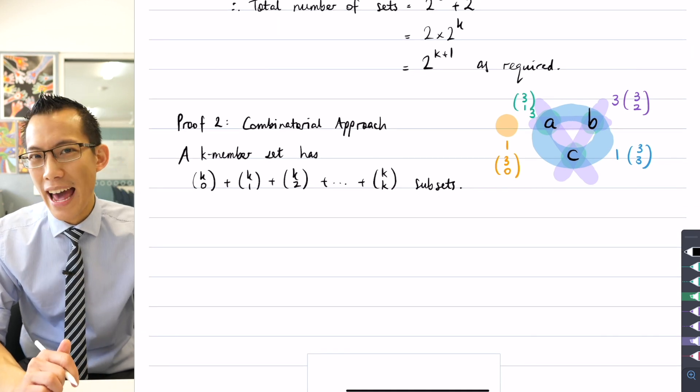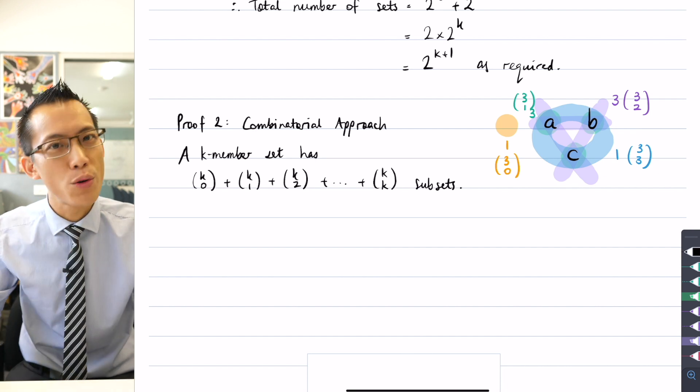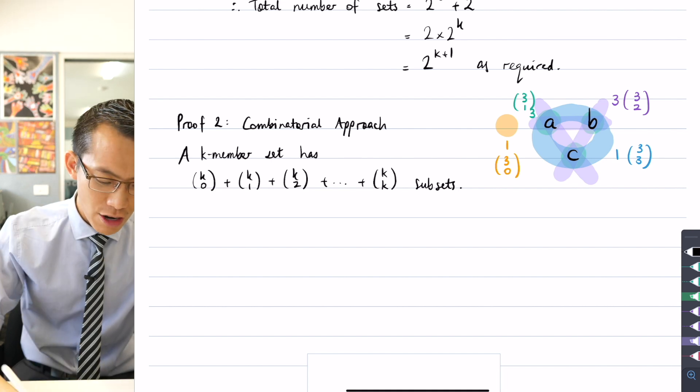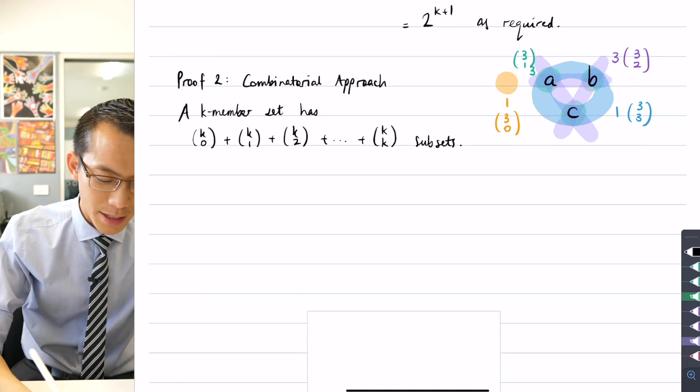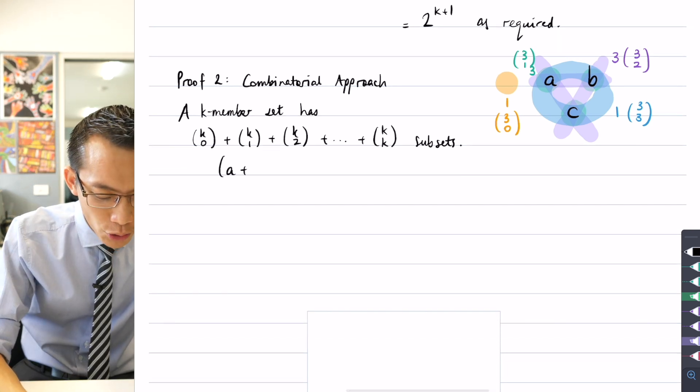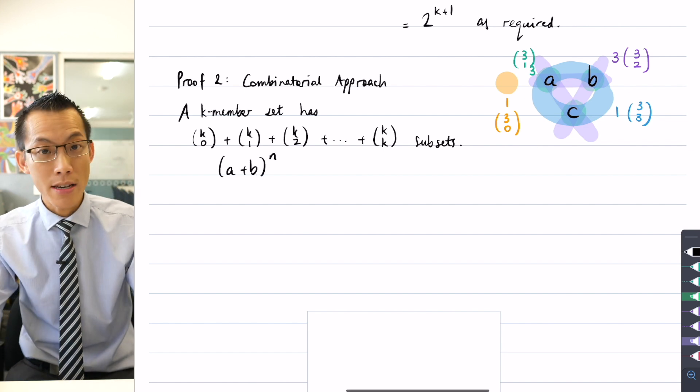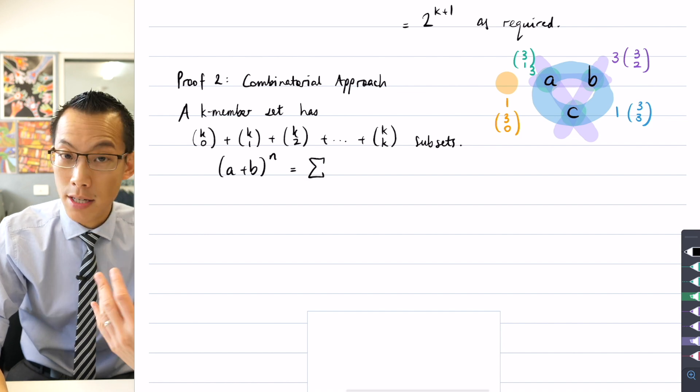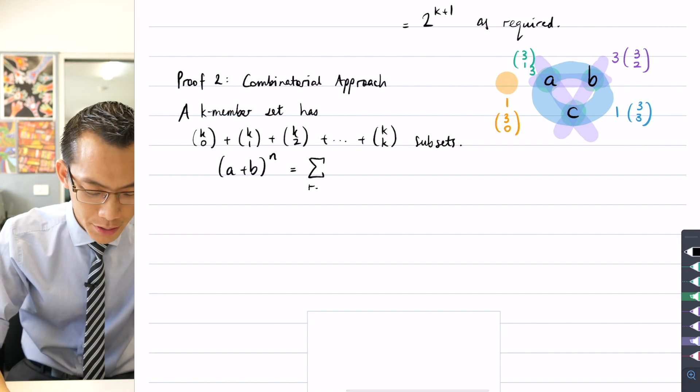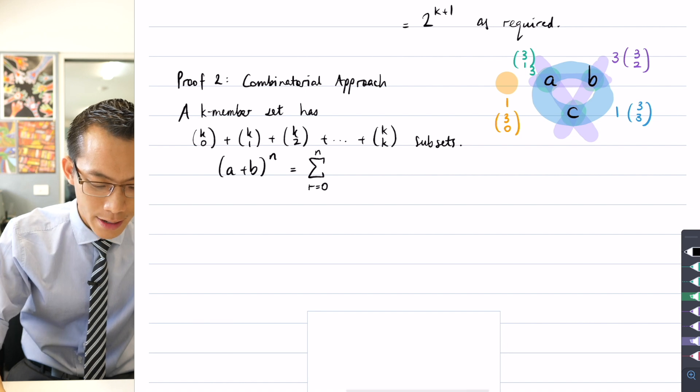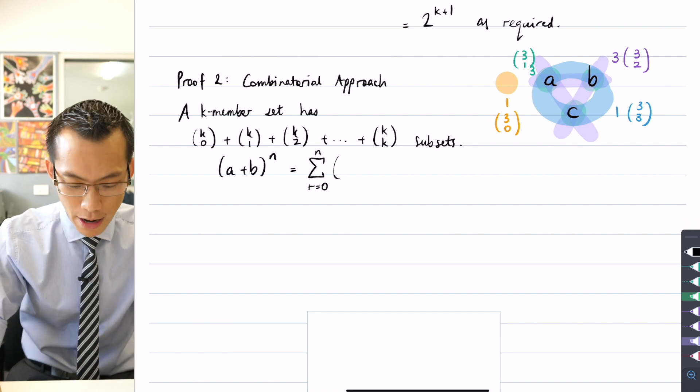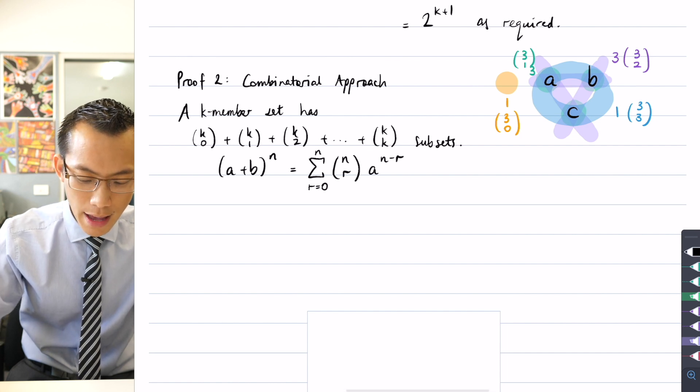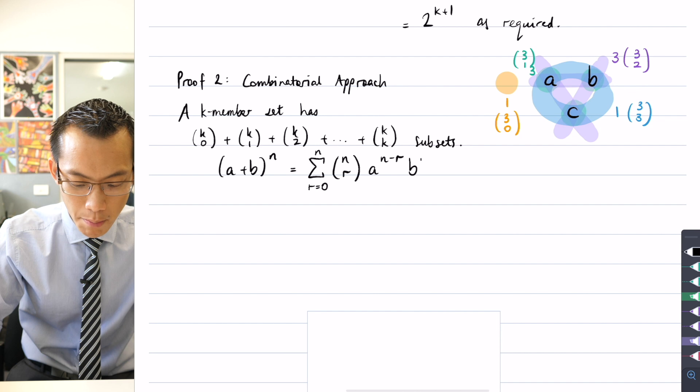Well, we already have notation for this from the binomial theorem, which we actually proved just a few days ago. The binomial theorem states that if you have some binomial a plus b all raised to some integer power n, what do you get? And the answer is sigma, the sum of from zero all the way up to n of, and then here comes the binomial coefficient, then you've got the term to do with a and then you've got the term to do with b.